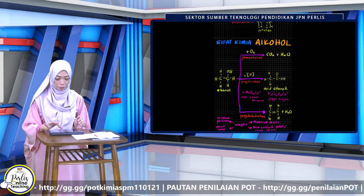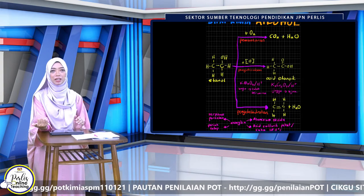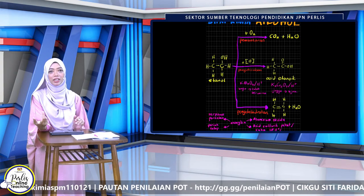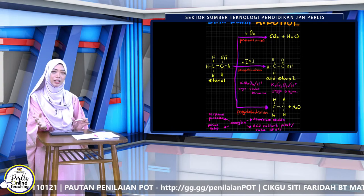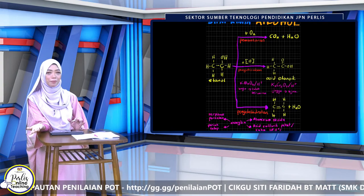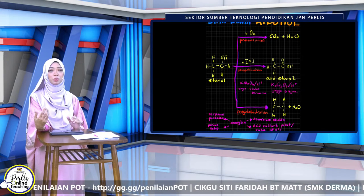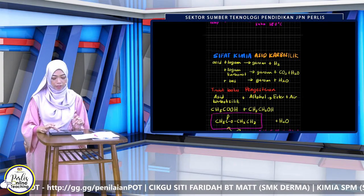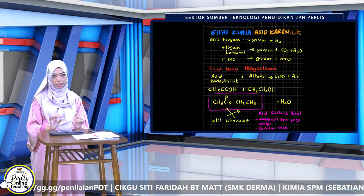Ini sifat kimia alkohol pula, ada tiga: alkohol boleh ada tindak balas pembakaran, pengoksidaan, dan penyahhidratan. Ada dia punya keadaan lah — perlu mangkin apa, perlu katalis, suhu ke. Dan seterusnya Cikgu kongsikan sifat kimia asid karboksilik.